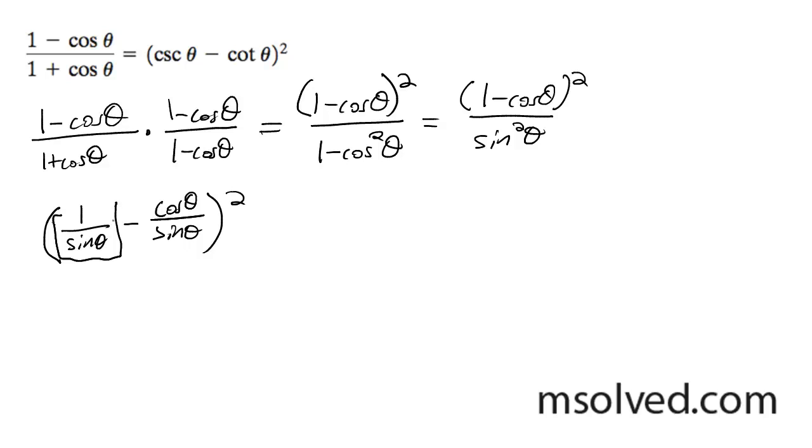This right here is equal to the cosecant and this right here is equal to the cotangent. So we end up with quantity cosecant theta minus cotangent theta, all of that squared.